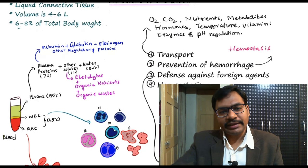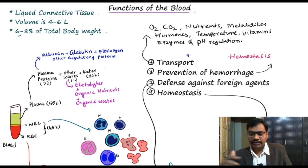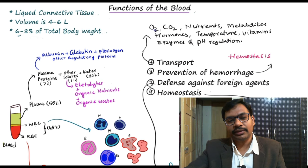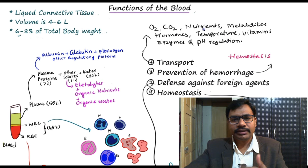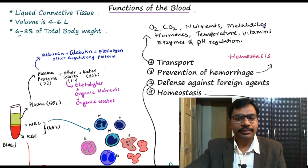Coming to the major functions, blood has four major functions. The first and foremost is transport. Blood transports oxygen from the lungs to the tissues and carbon dioxide from the tissues to the lungs. It also carries nutrients like glucose, triglycerides, cholesterol, other fat-related nutrients, and amino acids from the gastrointestinal tract to elsewhere in the body. Blood also transports metabolites which need to move from one place to another for metabolic and catabolic processes.